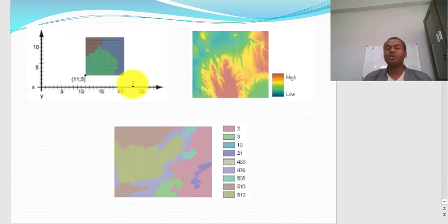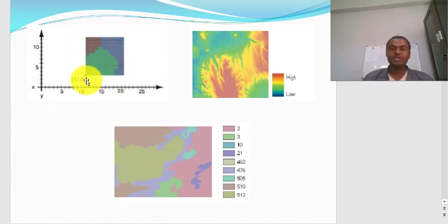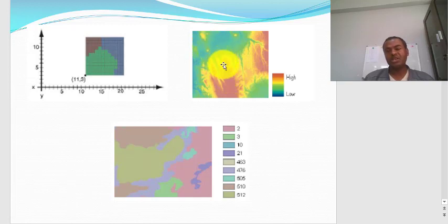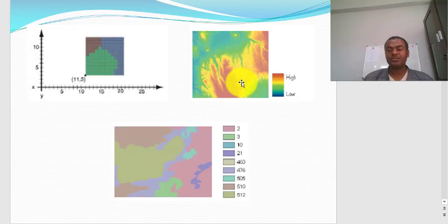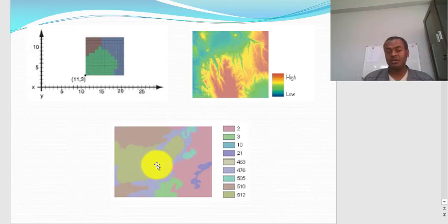Here are some examples of raster data models. This is a soil map where each pixel has its own x and y coordinates. This is a digital elevation model — elevation is continuous across an area, so the best way to represent it is usually with a raster data model. This is also categorical data that may represent the soil of an area.